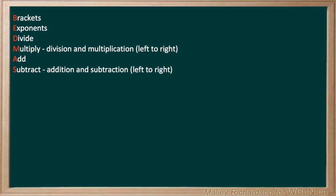Next we move on to 8 minus 6 divided by 3. We go through the list again and we can see that there are no brackets, no exponents, but there is division. So that means we have to do division first. 6 divided by 3 is 2, so we have 8 minus 2 to get a final answer of 6.